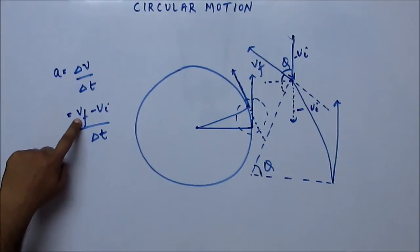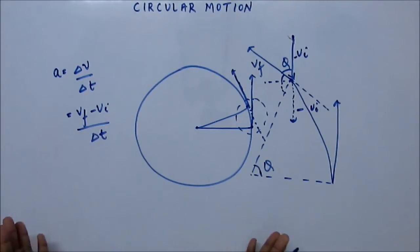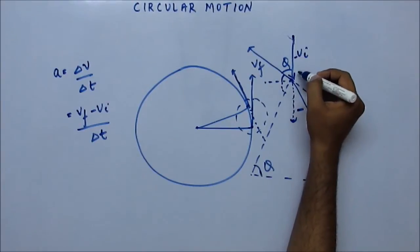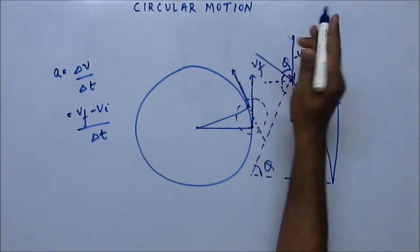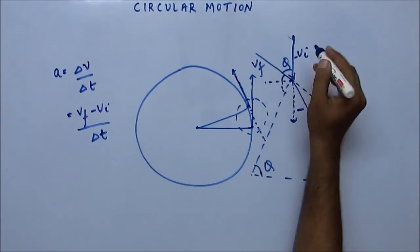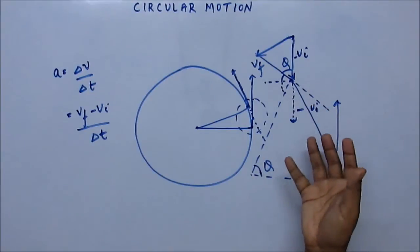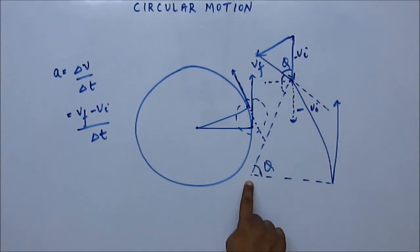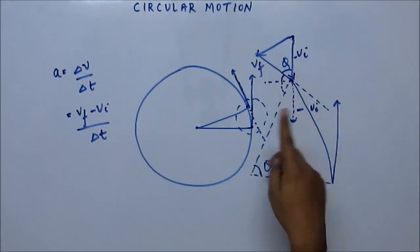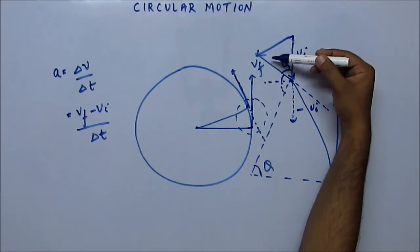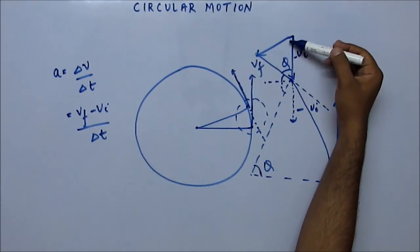We have to find the sum of vf and minus vi to find the change in velocity. We use the triangular law of vector addition — this vector plus this vector. The length of both vectors would be the same since their magnitude is the same. This angle is very small; we are looking at a very small time period. The sum of internal angles of a triangle is 180 degrees.